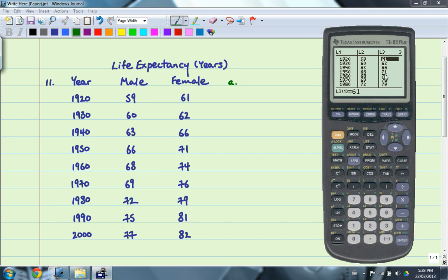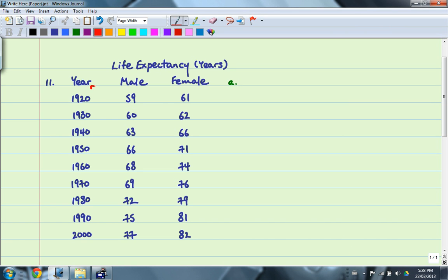Usually we don't use L3 because we don't usually compare three sets of data, but this is the case. So we have L1, L2, L3. L1, of course, is the years. L2 is the male life expectancy. And L3 is the female life expectancy. Let's go ahead and write these down because we will be referring to them quite frequently throughout the video.